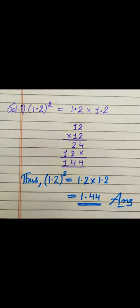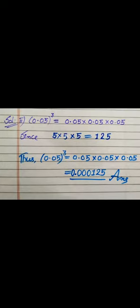The same we will do for the next one: 0.05 to the power 3, that is the cube of 0.05. Since the power is 3, we write 0.05 three times and multiply. We multiply the numbers without decimal: 5 into 5 into 5 = 125. In the question we have a total of 6 decimal places — 2 decimal places in each factor. But 125 has only 3 digits, so we increase 3 zeros before it to get 000125, and we can place the decimal as 0.00125. This is our final answer.